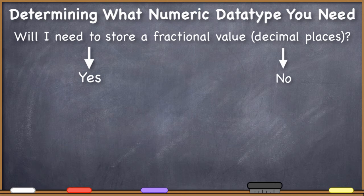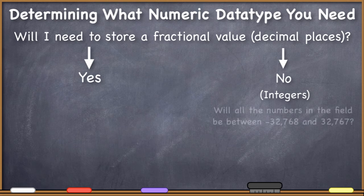Let's say that you don't need to store any kind of fractional values in the field. If you don't need to store fractional numbers, then what you're going to need to store are integers. And you should probably remember that term from math class even years ago. Integers are often called whole numbers because they don't include any fractional component to them.